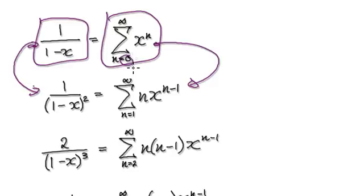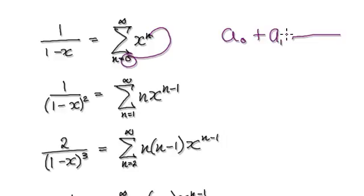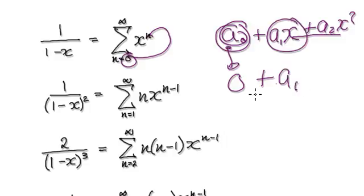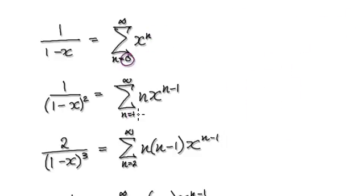Remember, the original series starts at n equals 0. Once you differentiate, you start at n equals 1. Because if you look at this, when n equals 0, you have a constant term — say a₀, plus a₁x plus a₂x² — and when you differentiate, that constant becomes 0. So you ignore it and start at n equals 1 after the first differentiation.